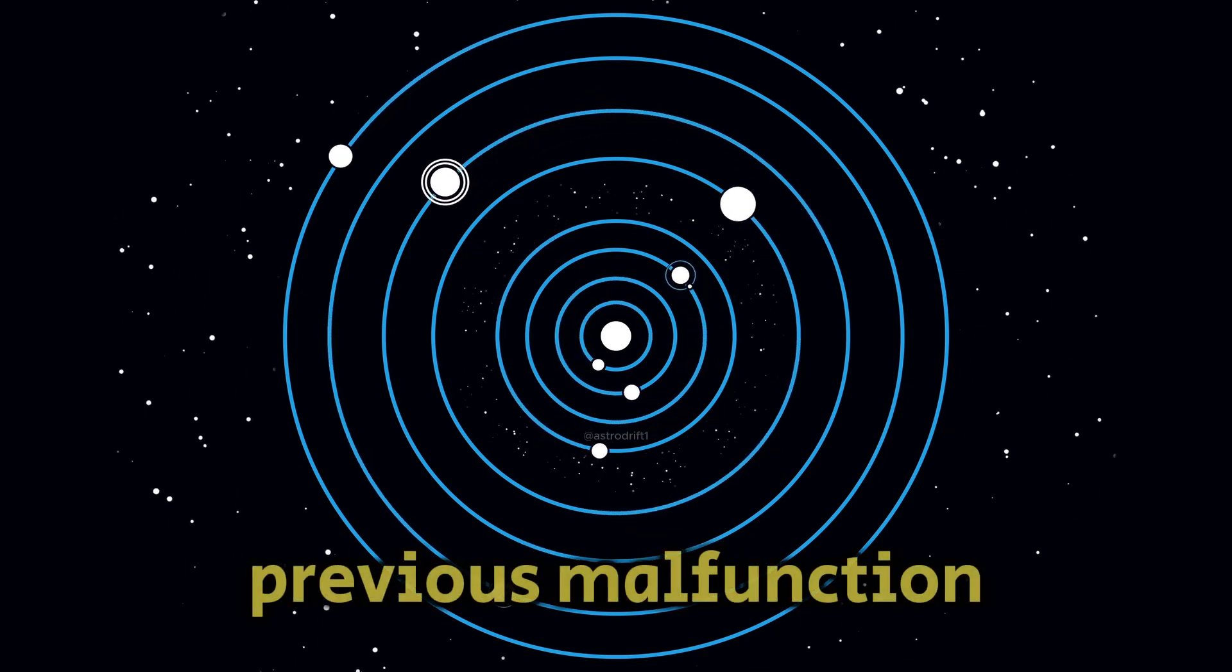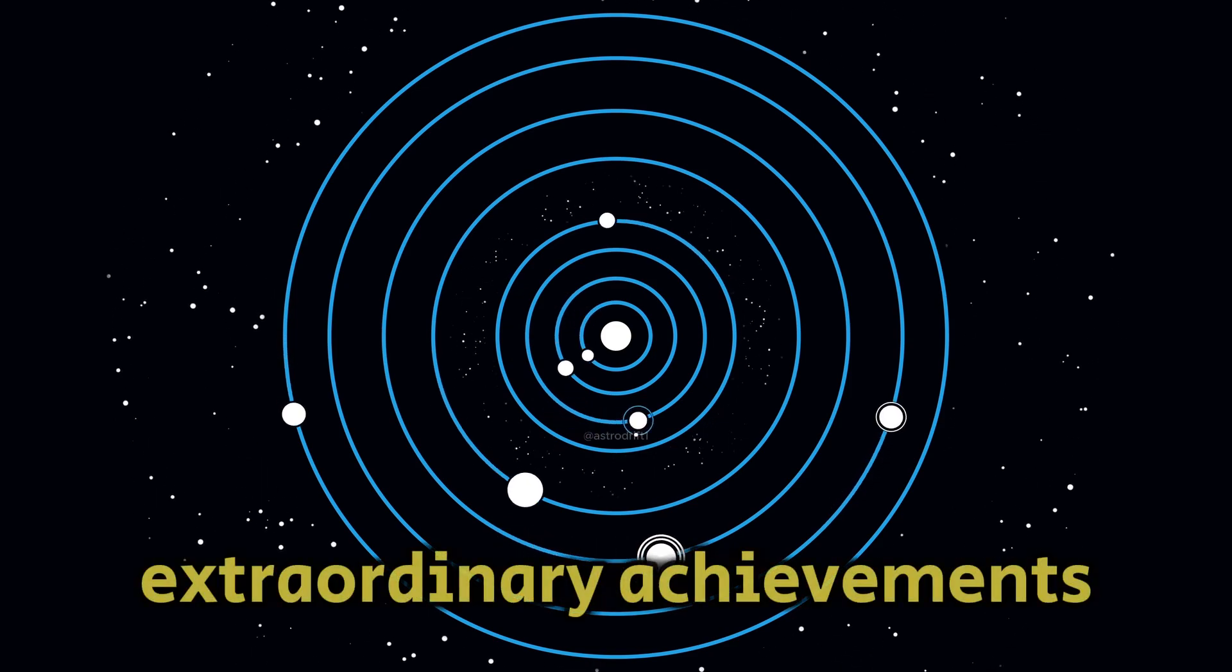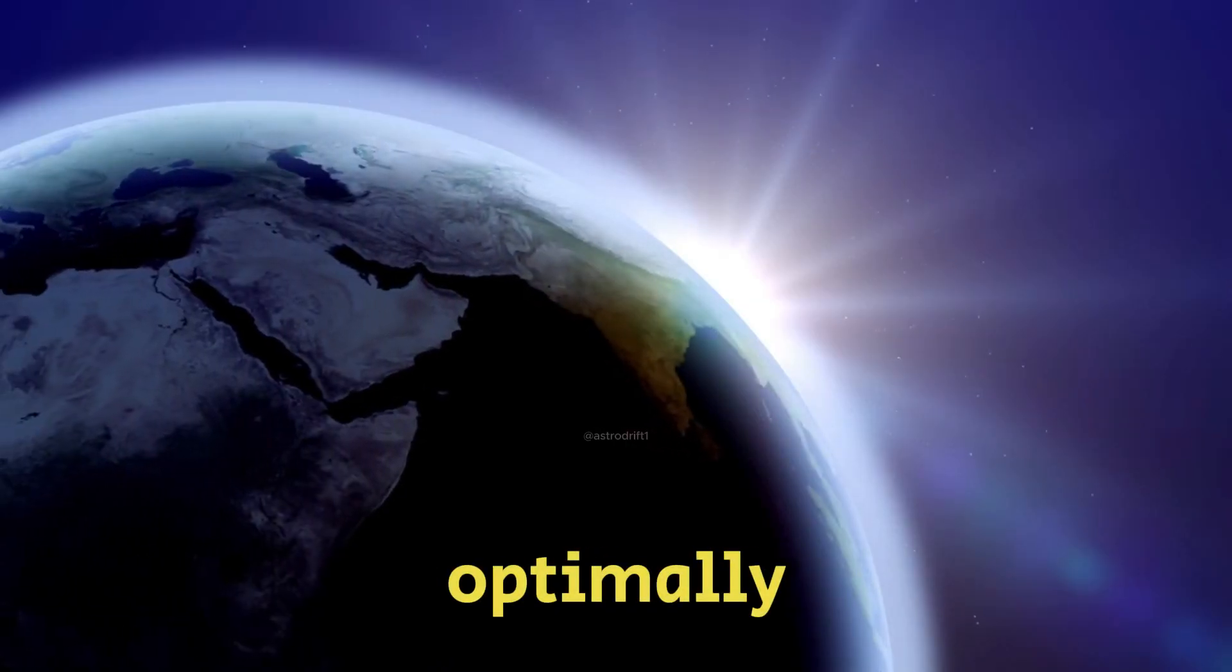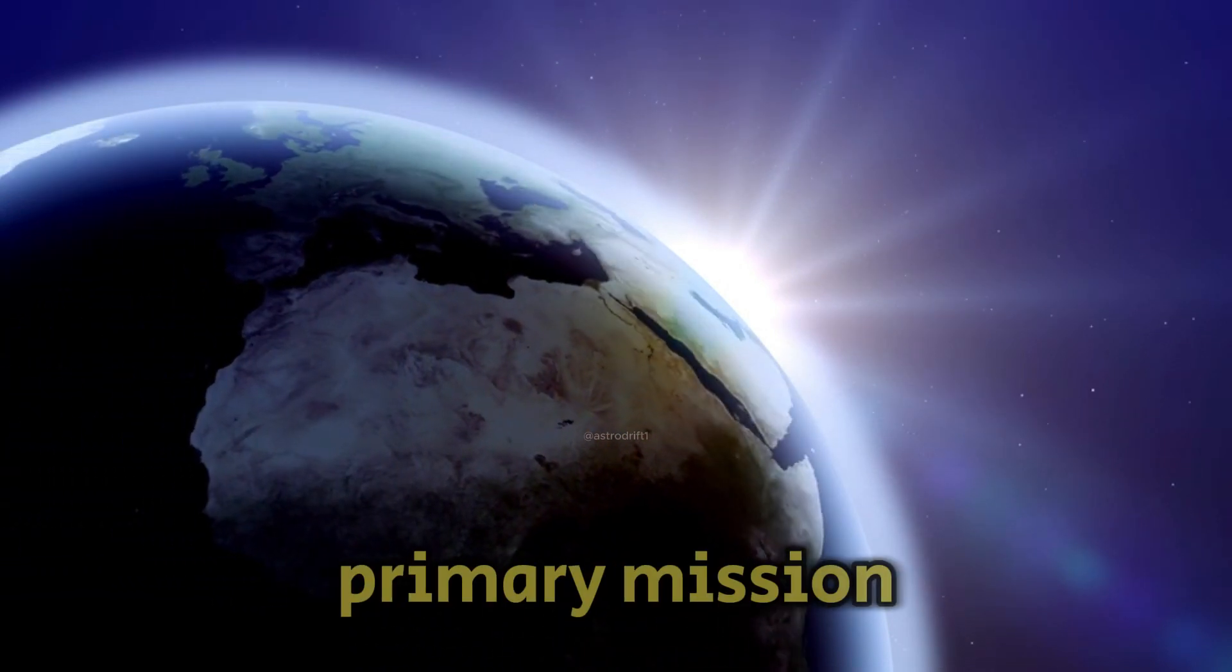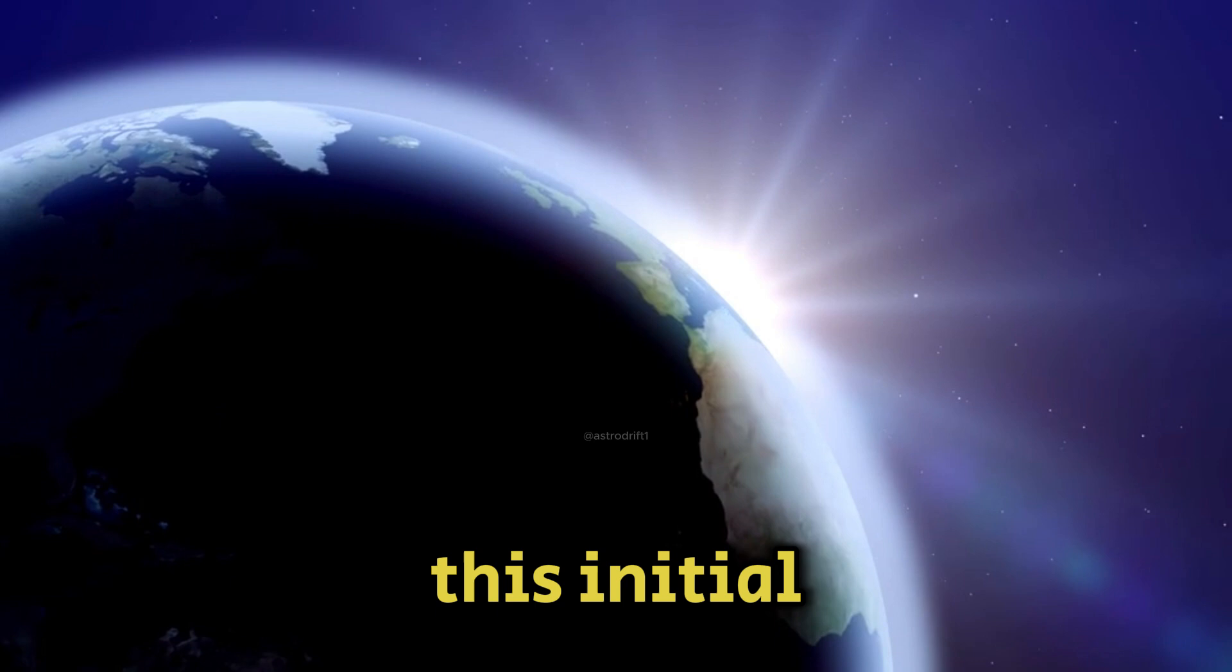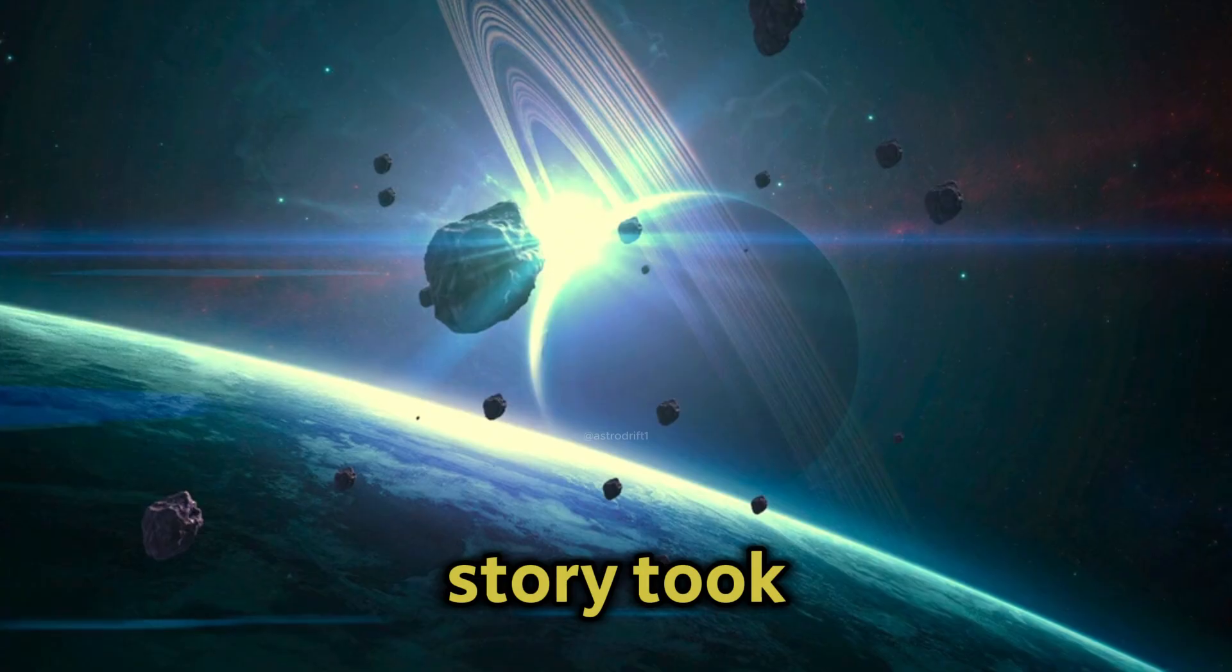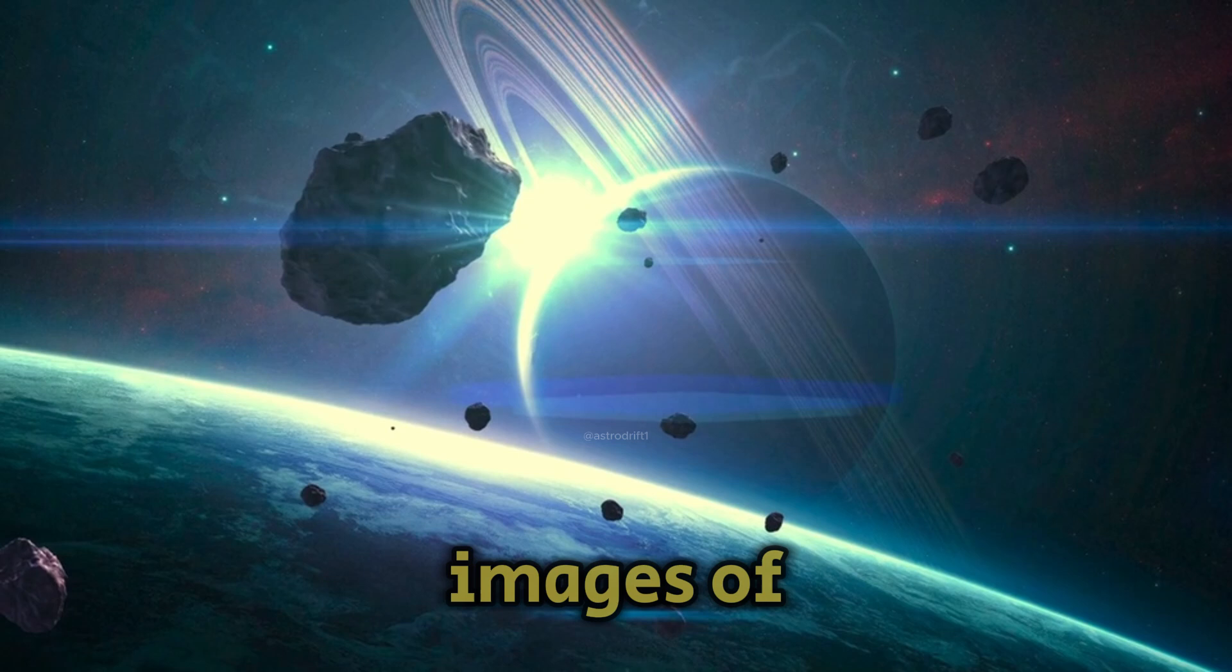Now that the previous malfunction of the space probe has been addressed, let's delve into the extraordinary achievements of Voyager 1 when it was functioning optimally. Launched on September 5, 1977, the spacecraft's primary mission was to explore our solar system, but its journey surpassed this initial goal.